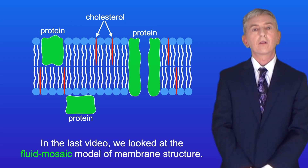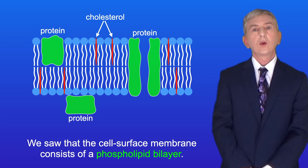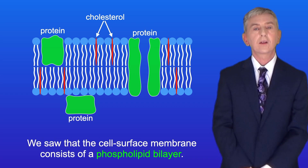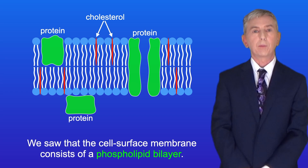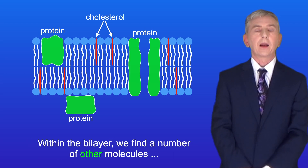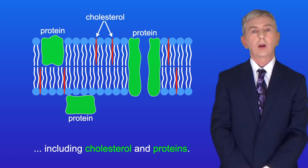In the last video we looked at the fluid mosaic model of membrane structure. We saw that the cell surface membrane consists of a phospholipid bilayer, and within the bilayer we find a number of other molecules including cholesterol and proteins.